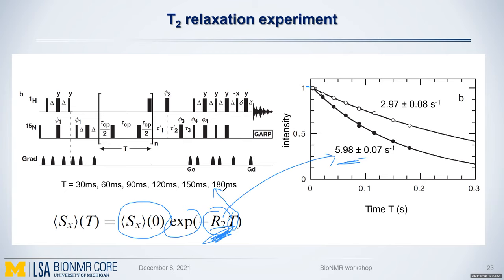From the T2 values you can get an idea of what different motions are happening in different regions of the protein. Residues in the core of the protein will have a higher R2 value; residues at the terminus will have a lower value. Comparing R2 values across residues gives insight into the different dynamics of different protein regions.